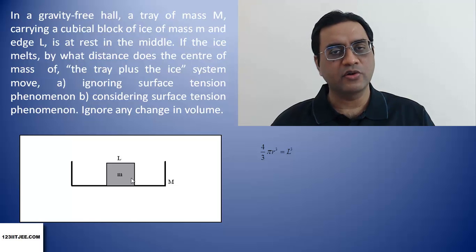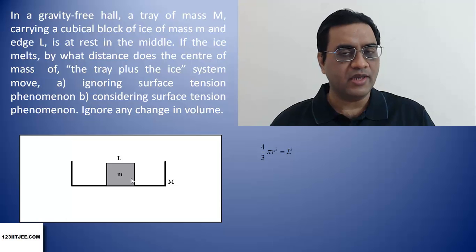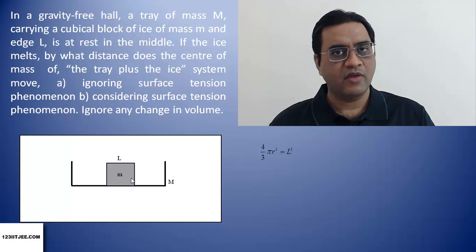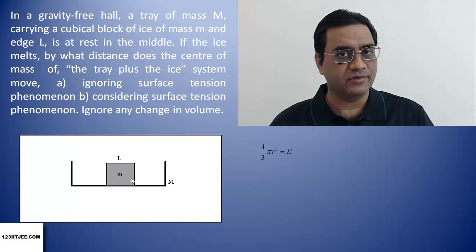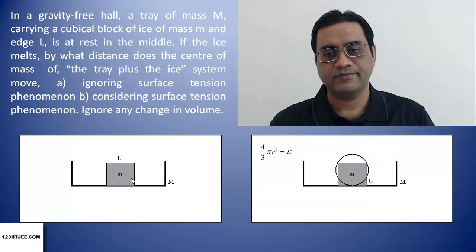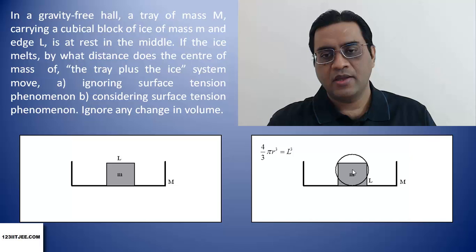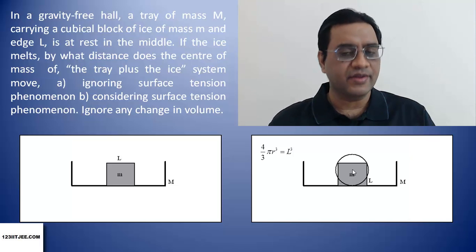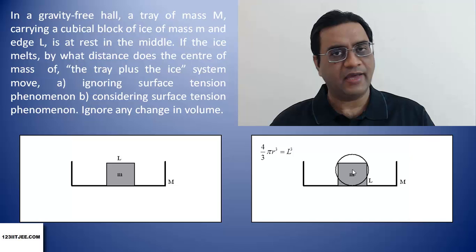Suppose there is no change in the position of the block even after it becomes spherical. We would have this type of situation. Because the radius is more than L by 2, it is around 0.6 L. And initially, the center of mass of the block was at L by 2.